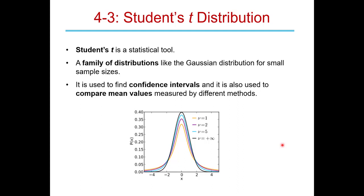Student's T is a statistical tool. The Student T Distribution is really a family of distributions — there's more than one of them. They're a lot like the Gaussian distribution, maybe a little shorter, a little fatter. They are distributions for a random error when you have small sample sizes.